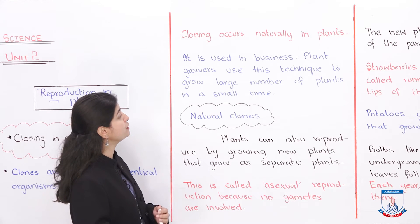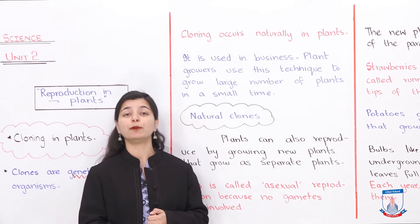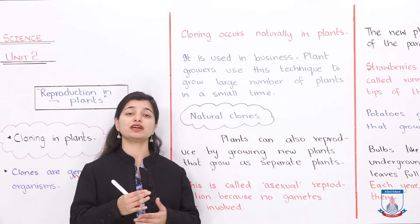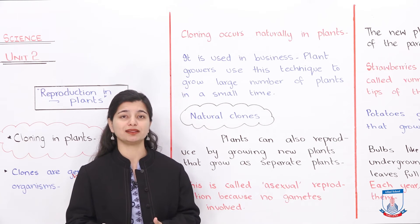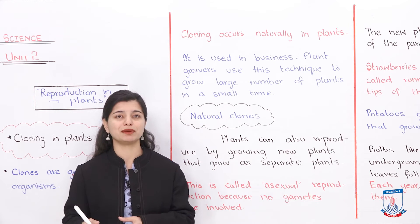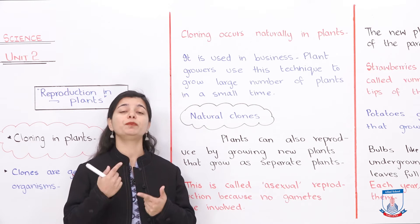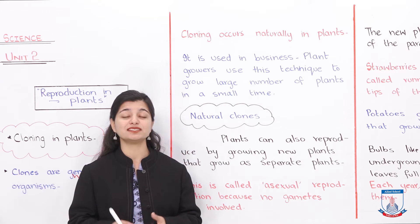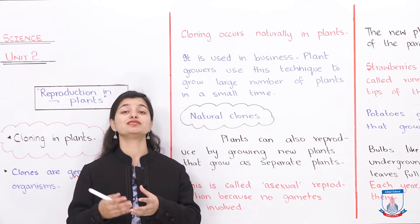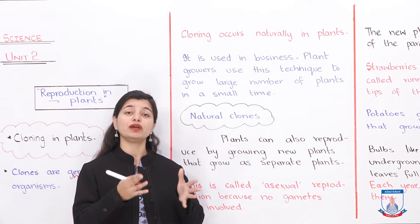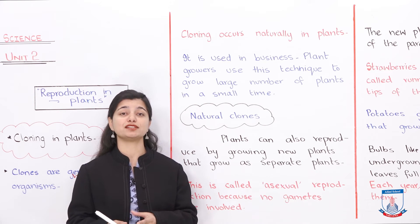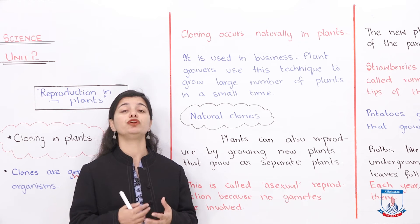Cloning is also used in business. Plant growers use this technique to grow a large number of plants in a short time. Instead of waiting for a plant to naturally reproduce, they create clones. For example, if they have a very good tomato plant, they clone it to produce many copies — more plants means more products to sell. Many businesses deploy this technique and use cloning to reproduce plants.